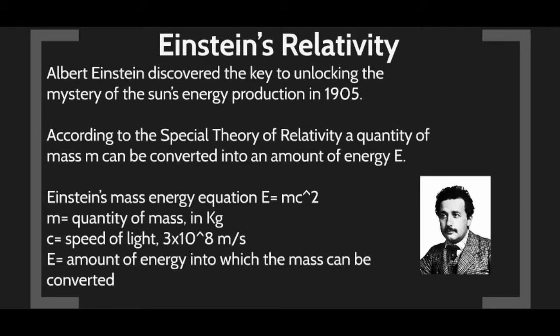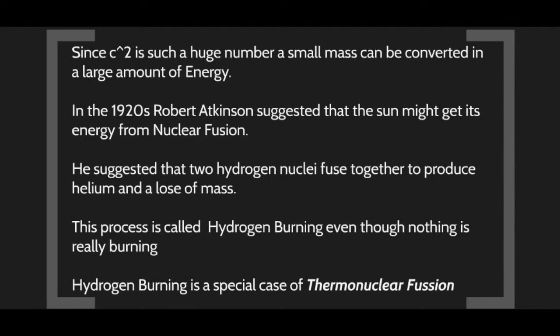His famous equation E equals MC squared is what allows the Sun to work. In this equation M is a quantity of mass in kilograms, C is the speed of light — 3 times 10 to the 8 meters per second — and E is the amount of energy. You can take energy and create mass, or take mass and create energy. The speed of light squared is an incredibly large number.